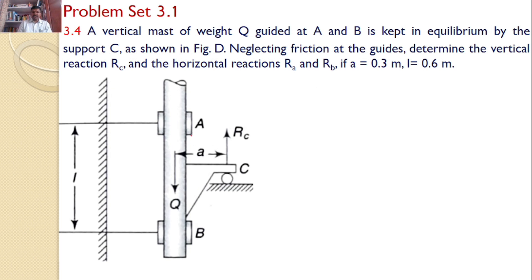That means there is a weight Q guided by two guides A and B and it is also supported by a roller support C. Our interest is to find the reactions at A, B and C.